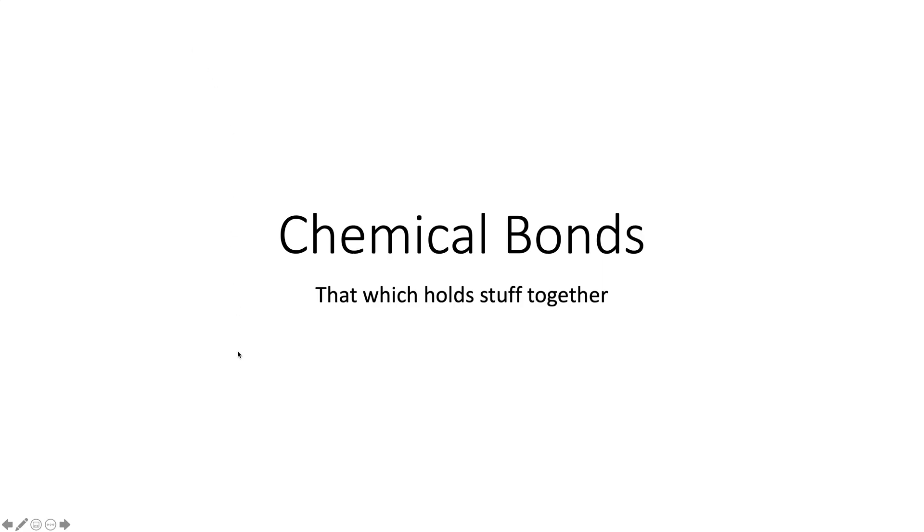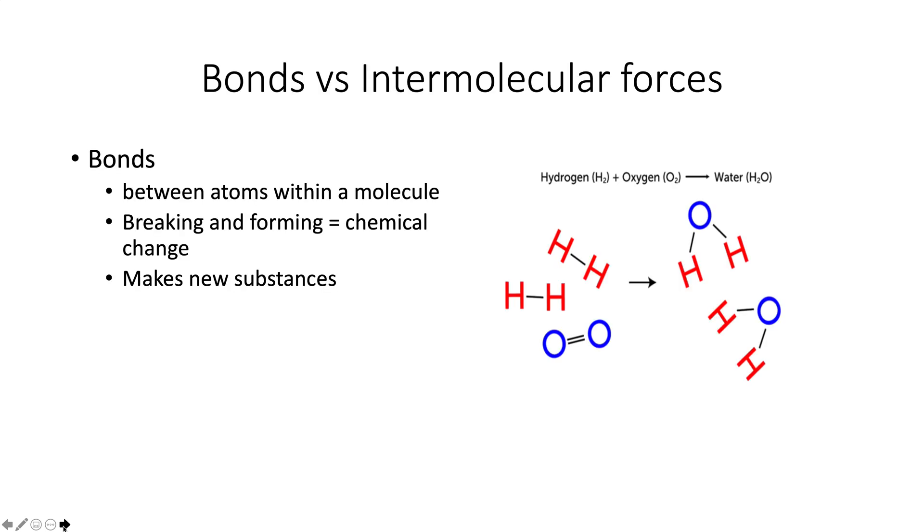This slideshow is about chemical bonds. We just finished talking about the periodic table, and we're going to look at chemical bonds. Chemical bonds are between atoms within a molecule, and we'll compare this to intermolecular forces. A chemical bond is between atoms within a molecule. Breaking and forming them is called a chemical change, and in a chemical change, you make new substances.